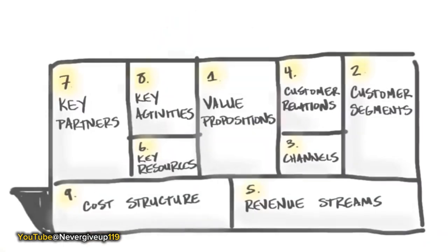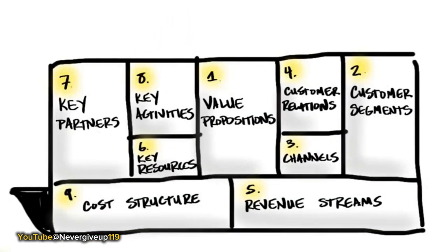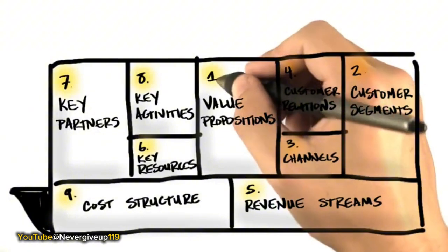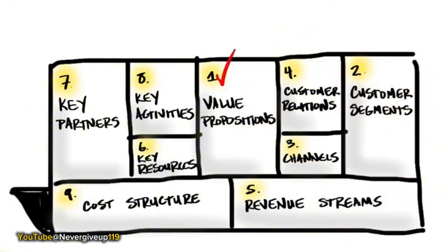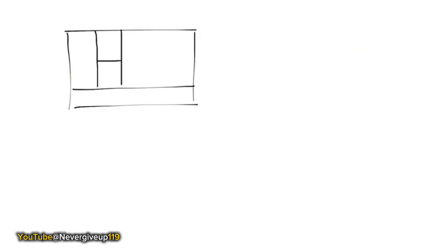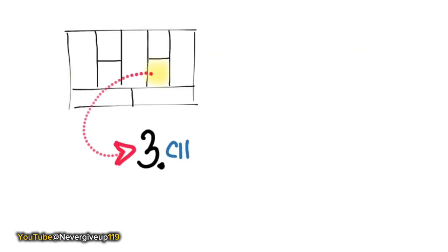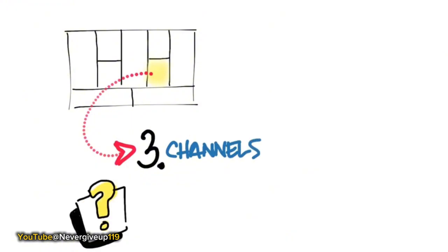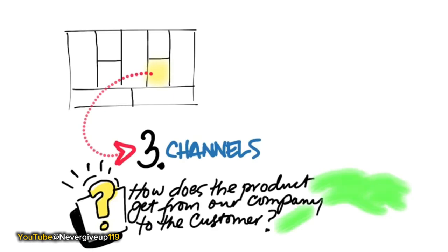Today, we're going to be talking about distribution channels. How does your product get from your company to your customer? You're all familiar with the business model canvas. We've already talked about value propositions and customer segments in the last two lectures. But today, we're going to talk about channels — just one of the nine boxes in the canvas, and it's a series of hypotheses of how does our product get from our company to our customer.